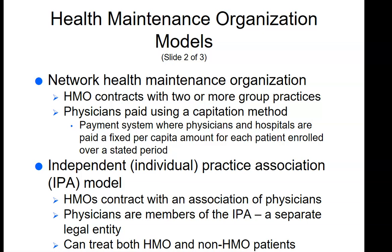In the network HMO model, the provider of service is paid at a capitation amount for each HMO patient, regardless of whether the patient is actually seen by the physician in any given month. In an independent or individual practice association (IPA) model, physicians are not employees and are not paid salaries; instead, they are paid for their services on a capitation or fee-for-service basis out of funds drawn from premiums collected from the subscriber, union, or corporation. The IPA usually withholds a portion of the capitation to cover operating costs for risk sharing and incentive purposes, and IPA physicians can also treat non-HMO patients.